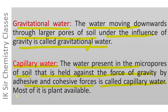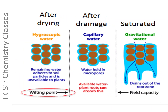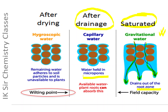The major portion of capillary water is available to plants for assimilation. As illustrated in the figure: if the soil is saturated with water, it contains gravitational water moving downwards through larger pores. This gravitational water drains out of the root zone. After drainage, water is held in the micro pores by adhesive and cohesive forces — this is capillary water — and its major portion is available for assimilation by plants.